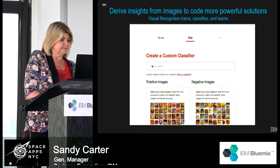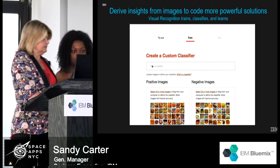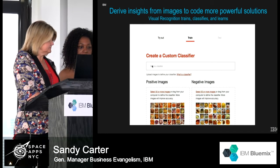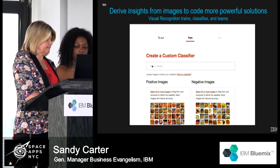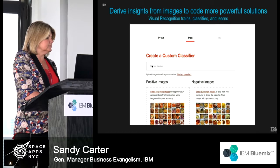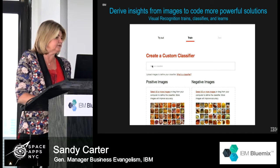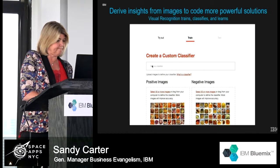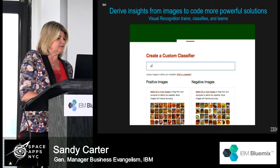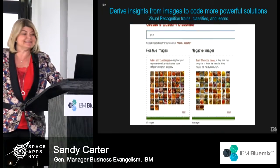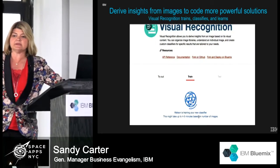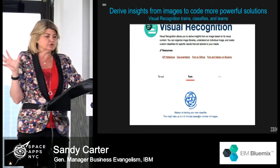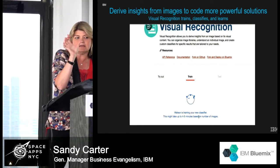So I'm typing in pizza, and what you're seeing here are the positive images of pizza and negative images of pizza. Watson is taking about four or five minutes to learn what pizza looks like and recognize it from a picture. Then we're going to test Watson — you can see up here all different types of pizza.